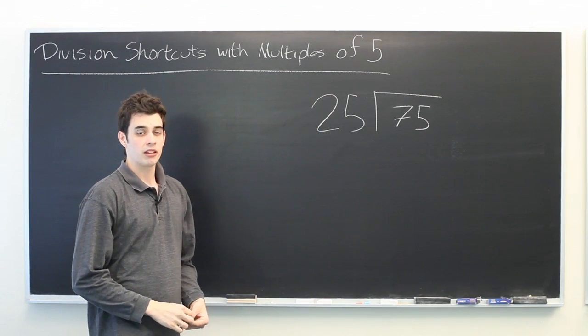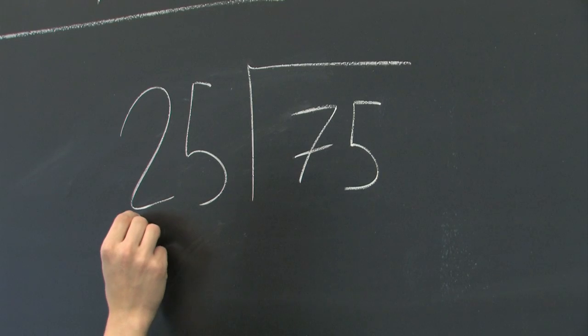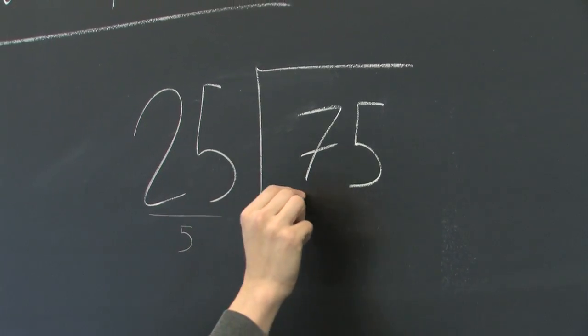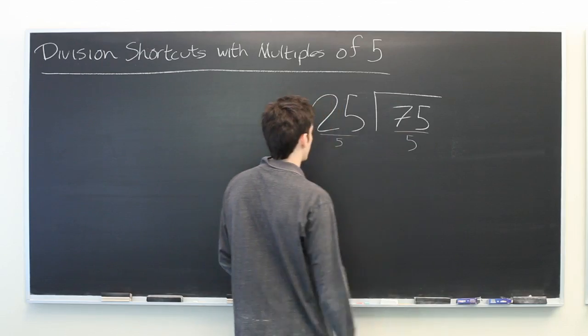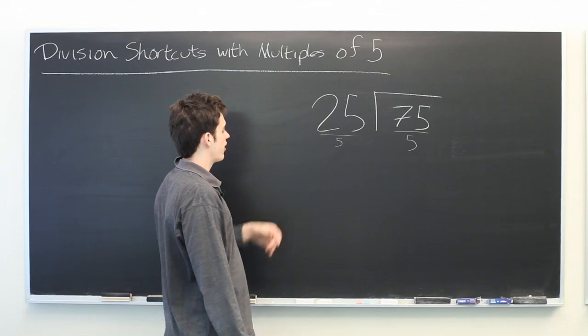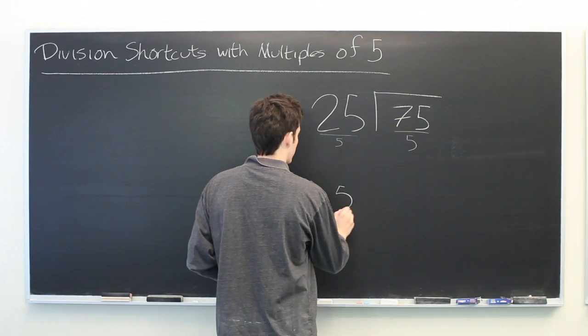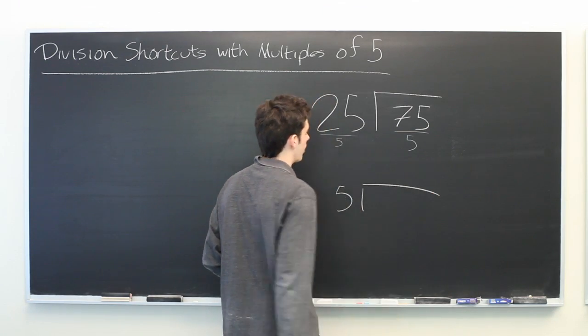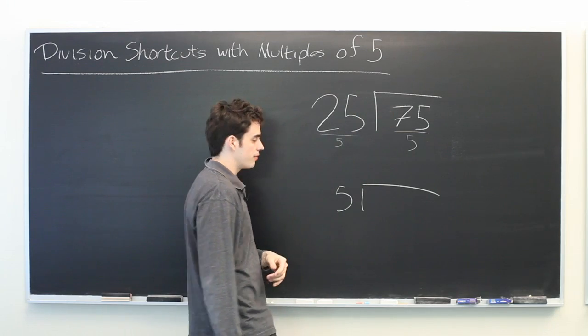We can make this problem a little bit simpler if we divide both of these numbers by five. Twenty-five divided by five is five. Seventy-five divided by five is fifteen.